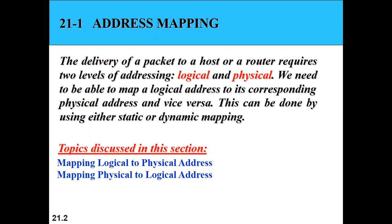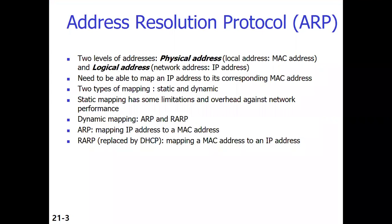We need to be able to map a logical address to its corresponding physical address, or a physical address to a logical address. This can be done using either static or dynamic mapping using ARP and reverse ARP. The physical address is a local address that comes with the machine, called the MAC address. The logical address is the 32-bit IP address.